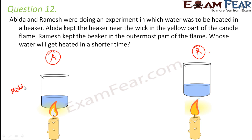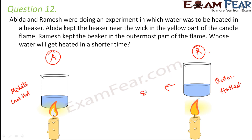Abeada's beaker is placed in the middle or luminous zone, while Ramesh's beaker is in the outer zone. The outer zone is the hottest zone and the middle zone is less hot. Whichever beaker is in the hotter zone will get heated up more quickly, so Ramesh's water will get heated in a shorter time.